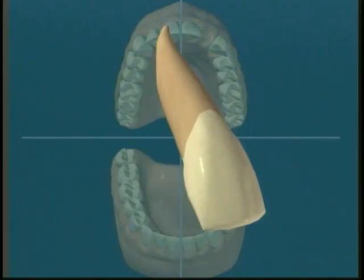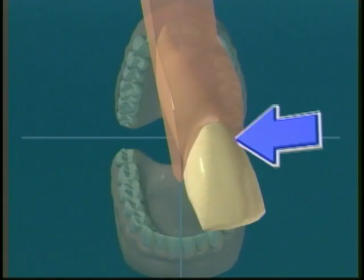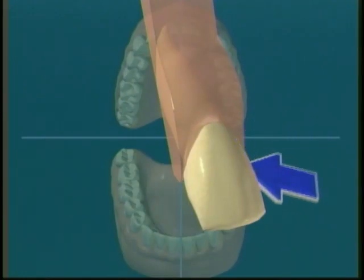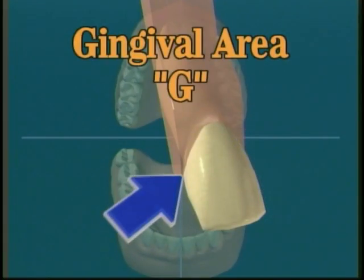Although it's not a surface, dentists will refer to the area of the tooth near the gingival tissue as the gingival area of the tooth. The gingival area circles the entire way around the tooth and is abbreviated G.